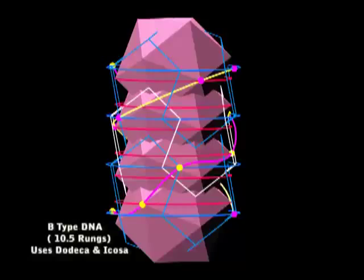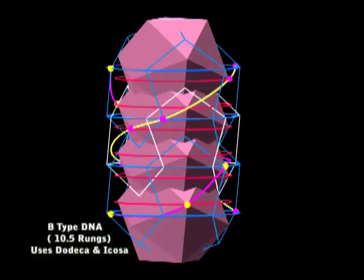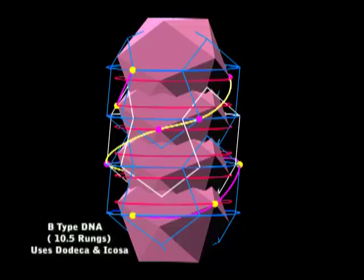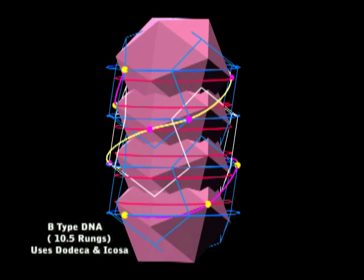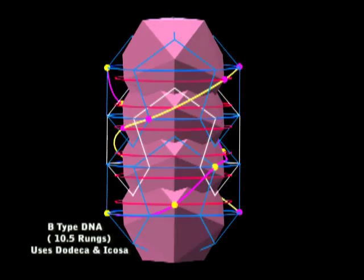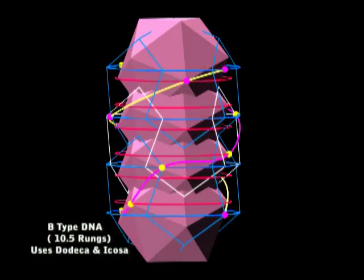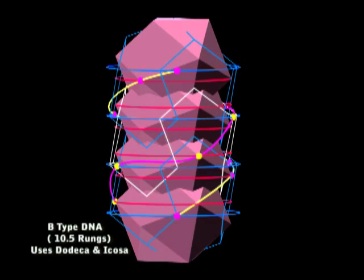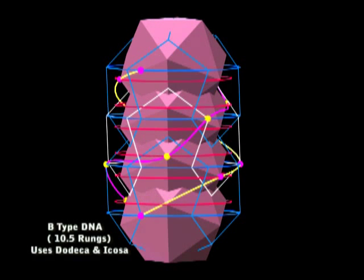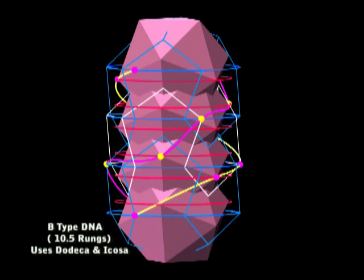Each blue ring will provide a horizontal rung. And each pair of red rings gives us a sloping rung for the ICOSA. And 120 degrees rotation is provided between each blue rung. The ICOSA rung gets the same 120 degree cycle.